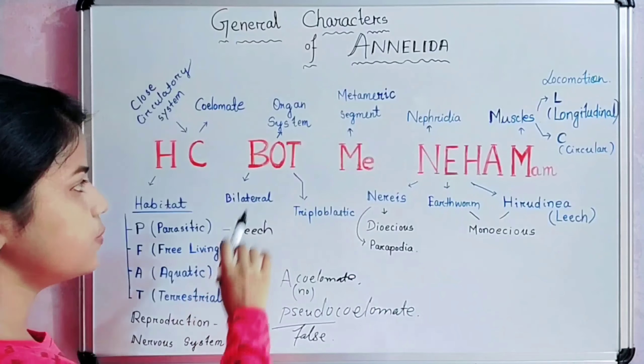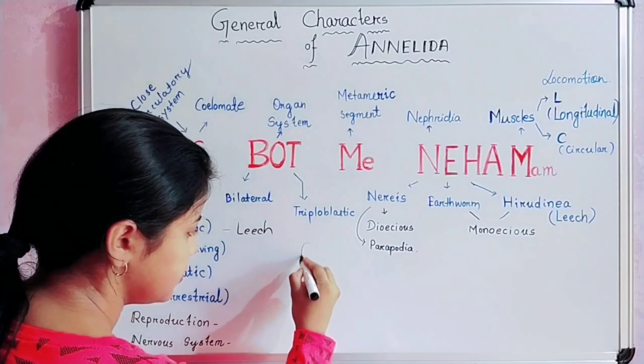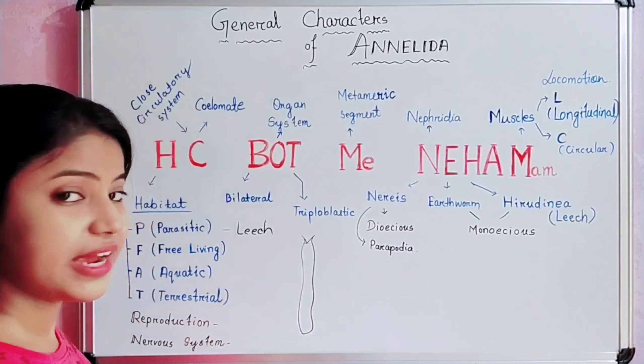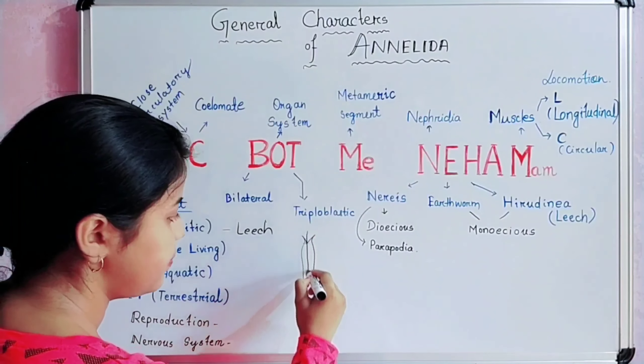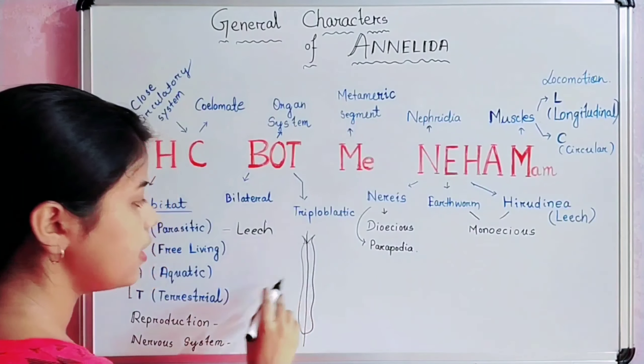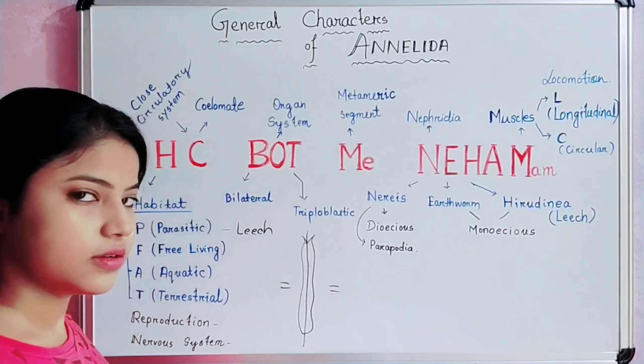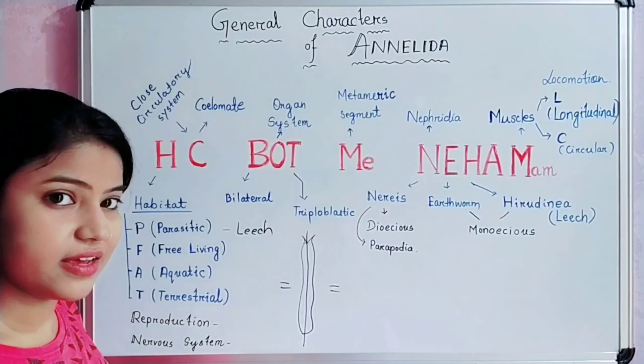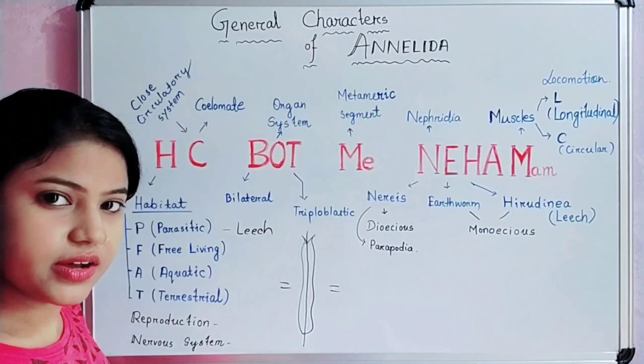The next letter is B. B means Bilateral symmetry. If we cut the body of Annelida along the lateral axis, then both the halves are similar. This is called Bilateral symmetry.